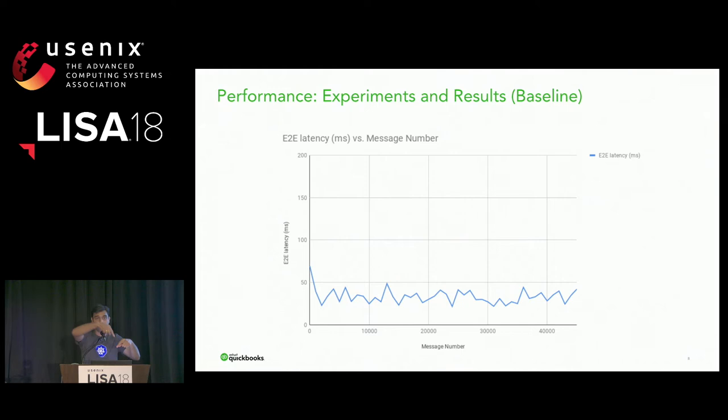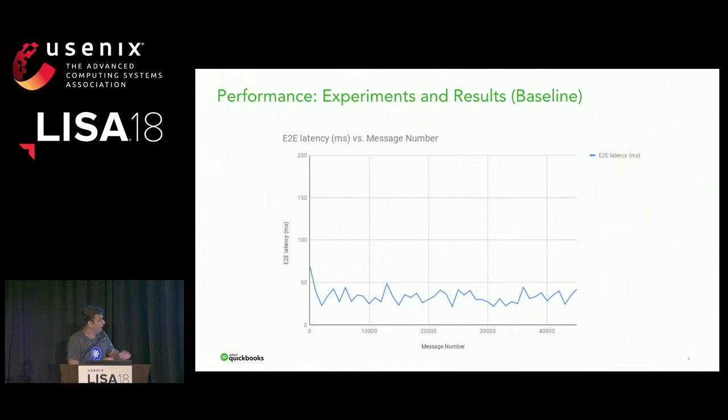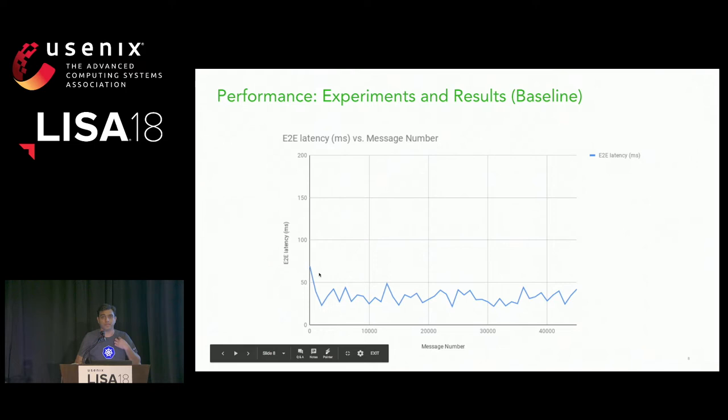The end-to-end latency here is the time from when a producer produces a message onto the Kafka bus to when a consumer finishes consuming it on the same topic. We wrote about 50,000 messages — the results were a little up and down. The first message always took a little more time because the SSL handshake can take a long time.